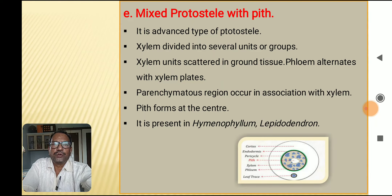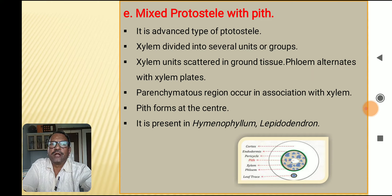The last protostele type is mixed protostele with pith. It is an advanced type of protostele. The xylem is divided into several units or groups scattered in ground tissue, and phloem alternates with xylem plates. A parenchymatous region occurs in association with xylem, forming pith at the center. It is present in Hymenophyllum and Libodendron.